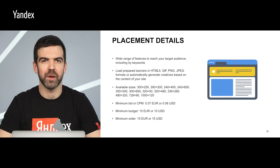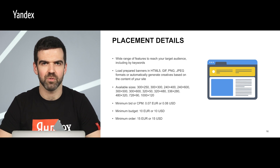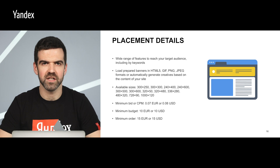Let's look at placement costs and formats. You can load prepared banners in HTML5, GIF, PNG, or JPEG formats, or automatically generate creatives based on the content of your site. There are 12 sizes available. Here you can see the minimum bid, minimum budget, and minimum order size.